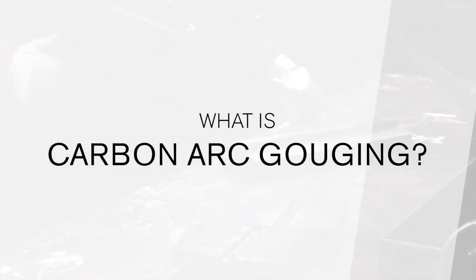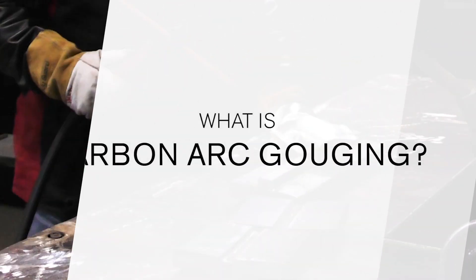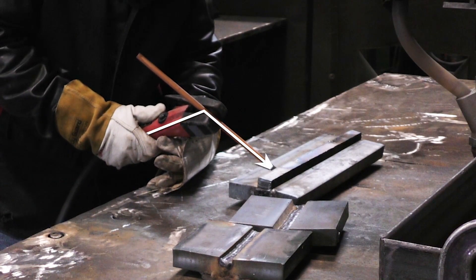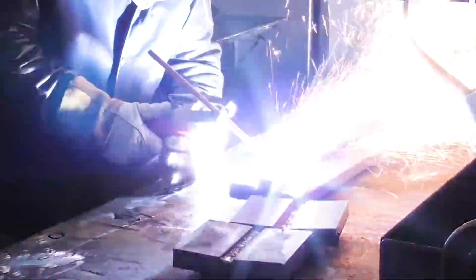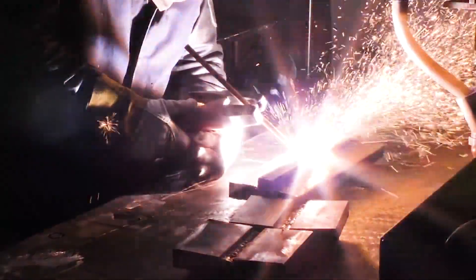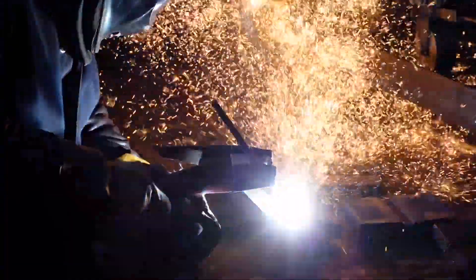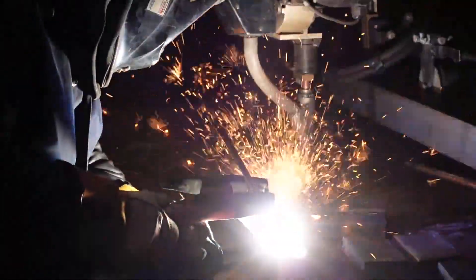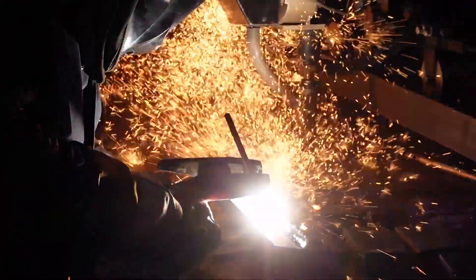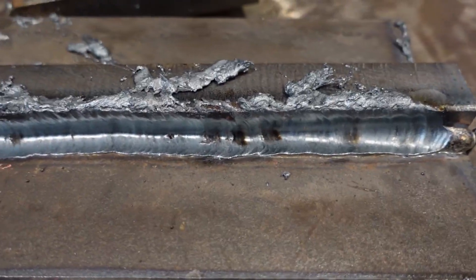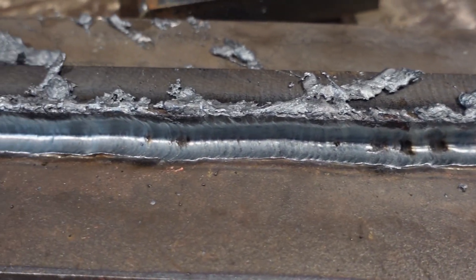What is carbon arc gouging? Carbon arc technology uses an electric arc that travels between the tip of a carbon electrode and a conductive metal workpiece. The metal becomes molten and a high-velocity air jet streams down the electrode to blow it away, leaving a clean groove. This technique is used for quick metal removal for back gouging, cracked or damaged welds, joint preparation, and for ship or equipment fabrication and repair. This technology was adopted because of its ease of use and efficiency.